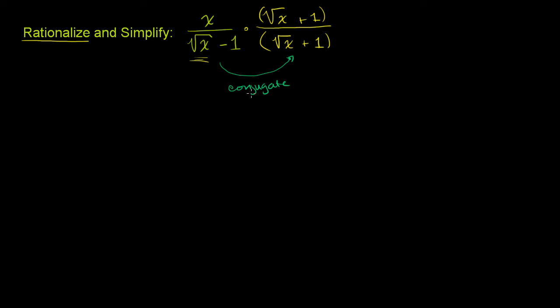It's a fancy word, but all it means is if I have a plus b, the conjugate of a plus b is just a minus b. So literally, I just swapped the sign right over there. And why it's good to multiply an expression like this times its conjugate is because you end up getting a difference of squares.